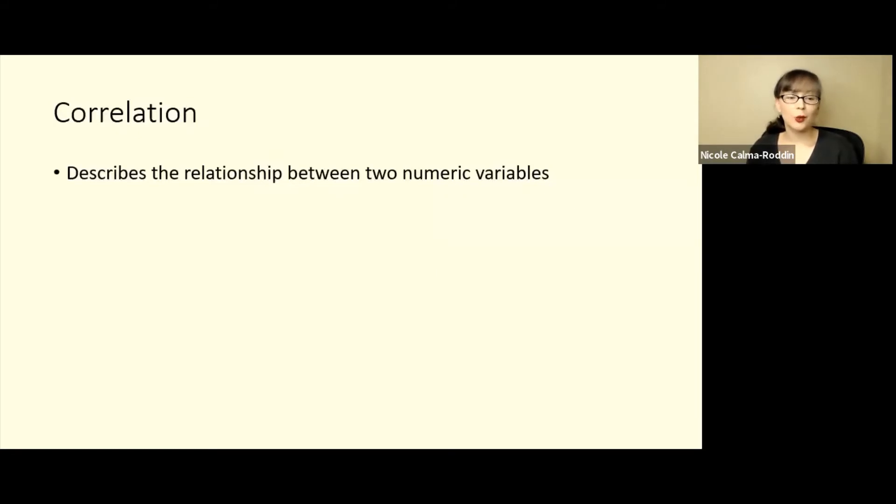When we talk about a correlation, a correlation describes the relationship between two numeric variables. Specifically, there's two different kinds of information that we get from correlation, whether we're looking at a scatter plot or a correlation coefficient.